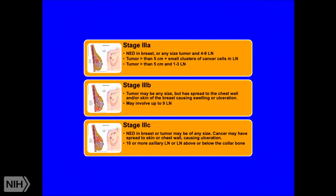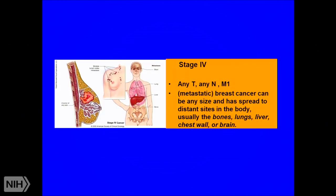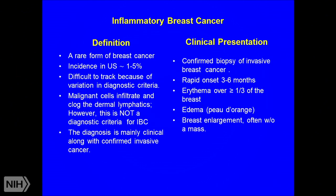Stage four breast cancer, when cancer has spread to distant sites, is not curable but patients can do well for quite some time with current treatments. The most common areas of spread are bones, lungs, liver, chest wall, and brain.